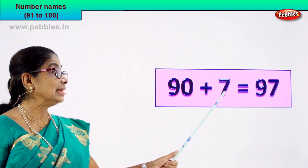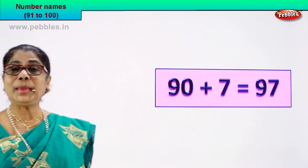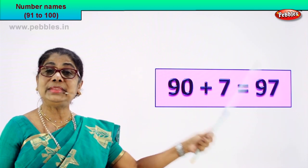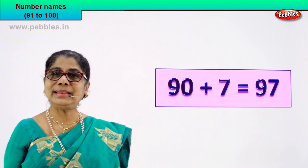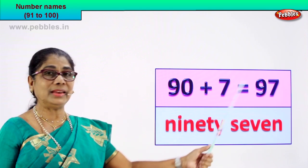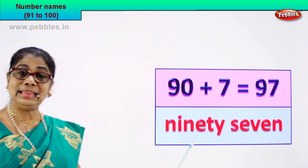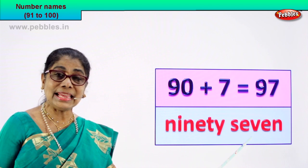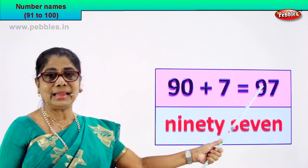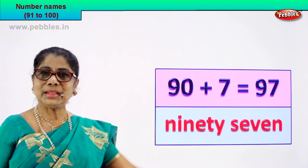Shall we go to the next numeral? 90 plus 7 is equal to 97. 9 and 7 — 97. That is the numeral. This number has a name. How do we write it? You know 90 and you know 7. Spelling it out: N-I-N-E-T-Y — ninety — S-E-V-E-N — seven. 97 — ninety-seven. And its name is ninety-seven. Very good!